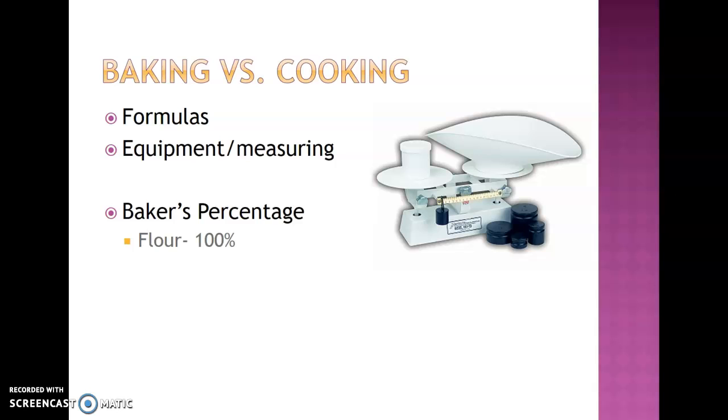If you had two different flours in the recipe, you would total them up to being 100%. So you might have 20% whole wheat flour and 80% all-purpose flour. That total amount, let's say one pound, would be 100%. So if sugar was 50%, then you would be looking for half a pound.